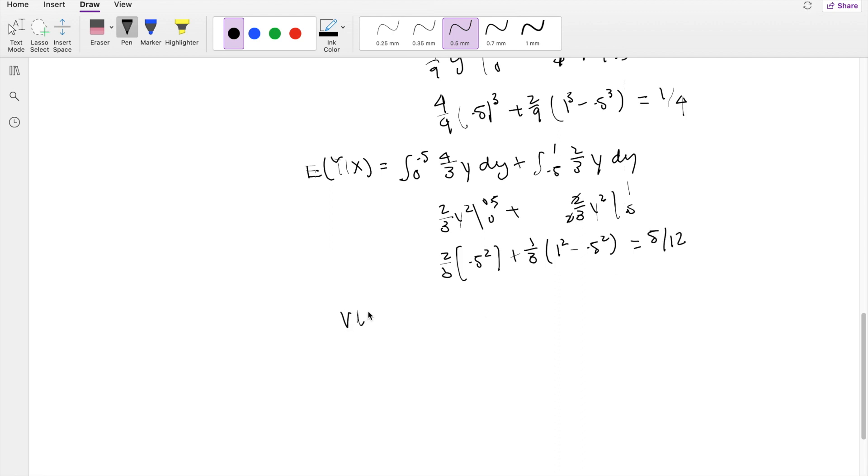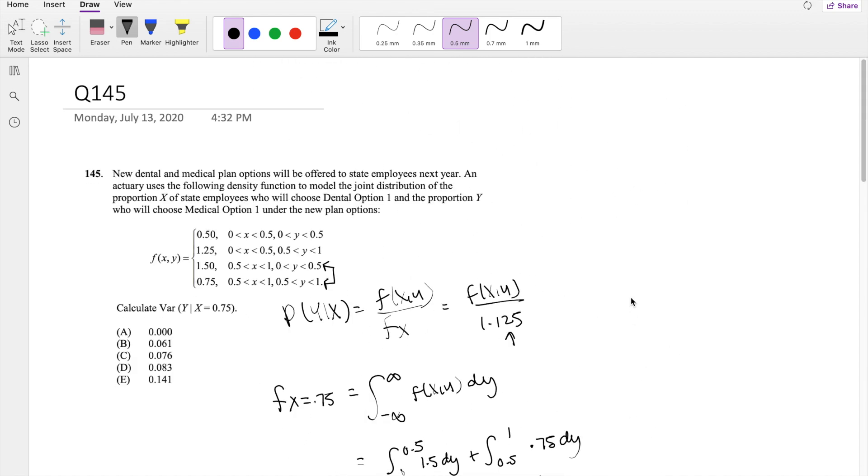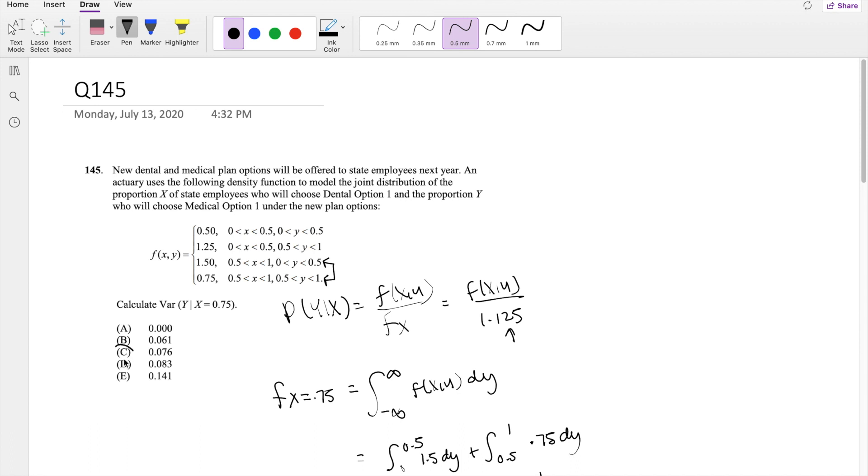So I'm finally putting it back in our variance formula, this is equal to the second moment, minus the first moment, the whole thing squared. So the first moment here is going to give you 1 fourth, minus the second moment, that's going to be 5 twelfths squared, so this is equal to 0.076388, which is approximately equal to 0.076388, or answer C.